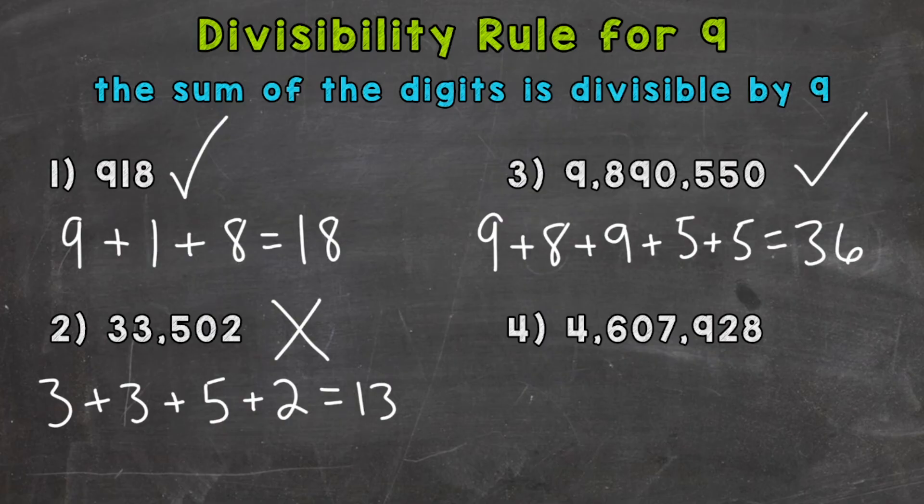And lastly, number 4, we have 4,607,928. So let's take the sum of the digits and see what we end up with.